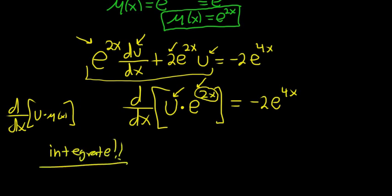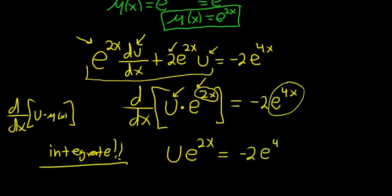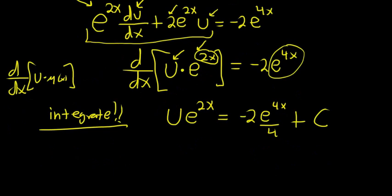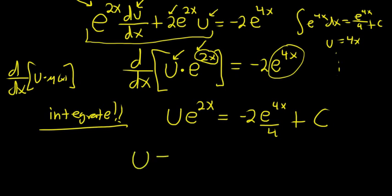The next step is to integrate both sides. Integrating the left side, the d/dx goes away and we get u·e^(2x). On the right, integrating negative 2·e^(4x): to integrate e^(4x) you write it again and divide by 4, giving negative 2 · e^(4x)/4, which simplifies to negative one-half · e^(4x), plus C. Dividing everything by e^(2x): u equals negative one-half · e^(2x) plus C·e^(negative 2x).